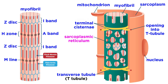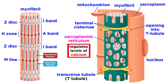Beyond this, we must be aware of the sarcoplasmic reticulum, a series of tubules that surround each myofibril. These regulate levels of calcium, which is needed for muscle contraction, through storage and release. This structure includes the T-tubules, which sit at each A-band/I-band junction, encircling each sarcomere, and helping signals reach every region of the muscle cell.